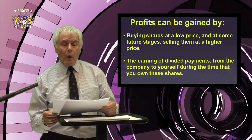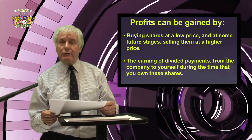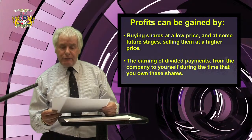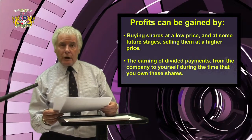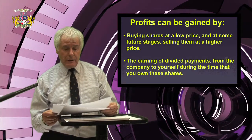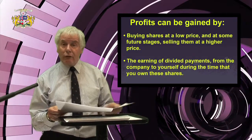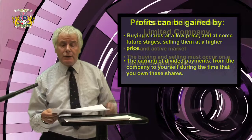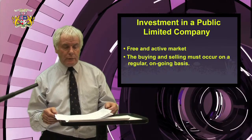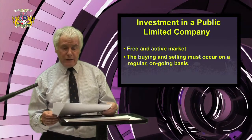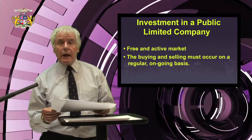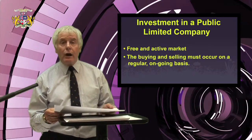Profits can be gained by: firstly, buying shares at a low price and at some future stage selling them at a higher price; and secondly, through the earning of dividend payments from the company during the time that you own those shares. In the UK, dividend payments are twice a year, and in the USA they are four times a year. For a PLC investment to grow, there must be a free and active market in shares, where buying and selling occurs regularly on an ongoing basis.